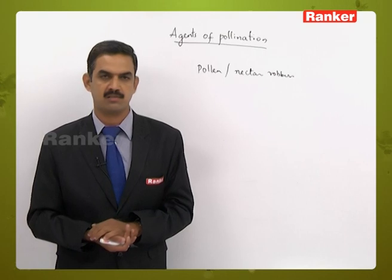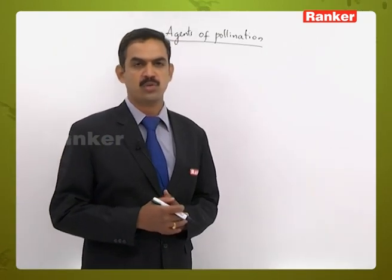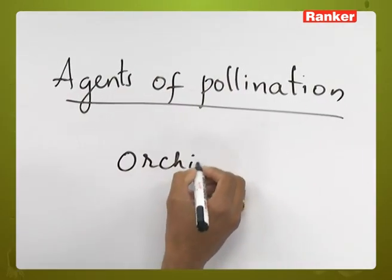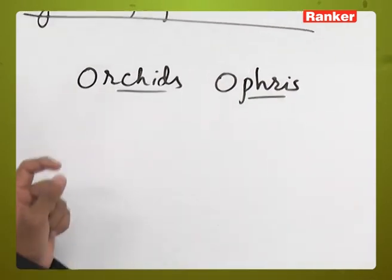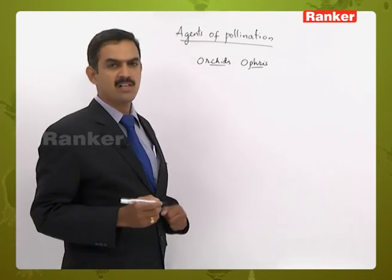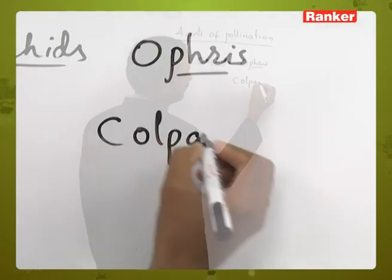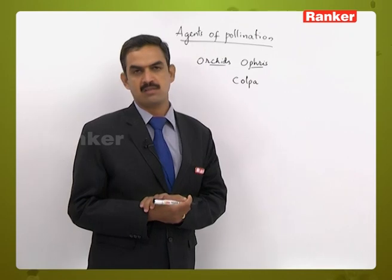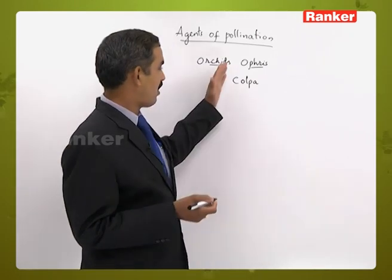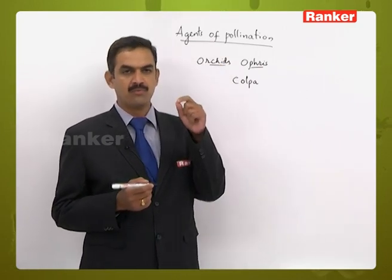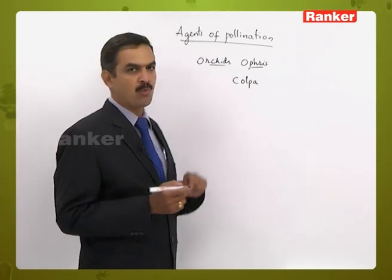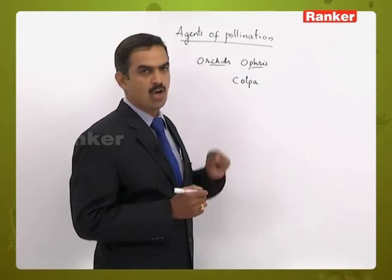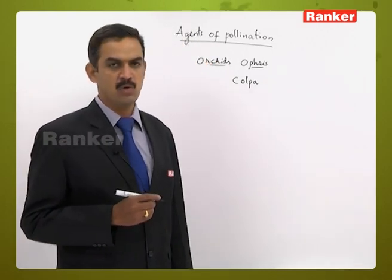Some insects show adaptations for acting as pollination agents. For example, the orchid Ophrys structurally resembles the female of a moth called Colpa. The Colpa moth mistakes the Ophrys flower for a female Colpa and attempts to copulate with it — a process called pseudo-copulation. During this pseudo-copulation, the Colpa helps transfer pollen grains from anther to stigma.